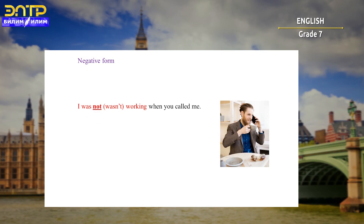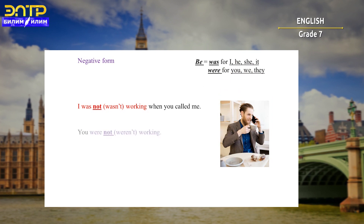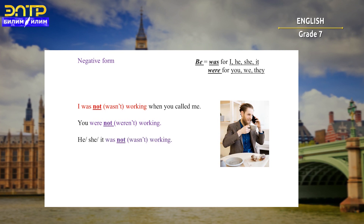Now let's look at the negative sentence: 'I was not working when you called me.' The first part in red is past continuous. You can say that with all other pronouns, but pay attention to the verb to be in past simple — singular and plural: 'You were not / weren't working', 'He/She/It was not / wasn't working', 'We were not / weren't working', 'They were not / weren't working'.